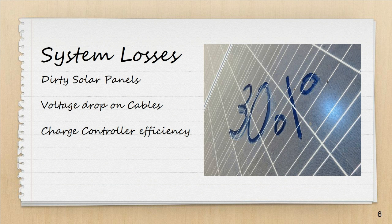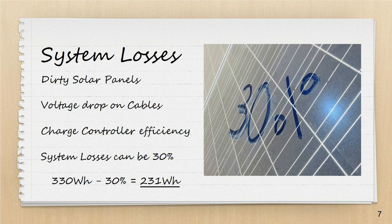However we won't be able to use all of that power because there's some losses to take into account. We could have some dirt on the surface of our solar panels. There'll be voltage drops on the cables between the panel and the charge controller and there's also some inefficiencies in the way the charge controller works and how it regulates the power from the solar panel to charge the batteries. So if we take all of those things into account we can expect some system losses of about 30 percent. So if we take our total power of 330 watt hours minus 30 percent system losses we come out with a net value of 231 watt hours and this is the value that we can actually use to decide what we can power within our van.